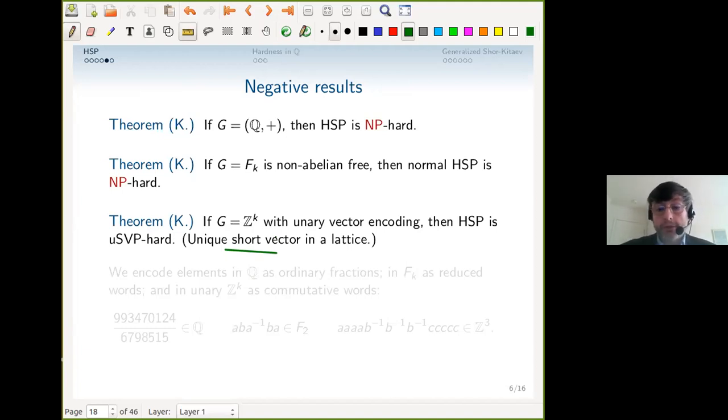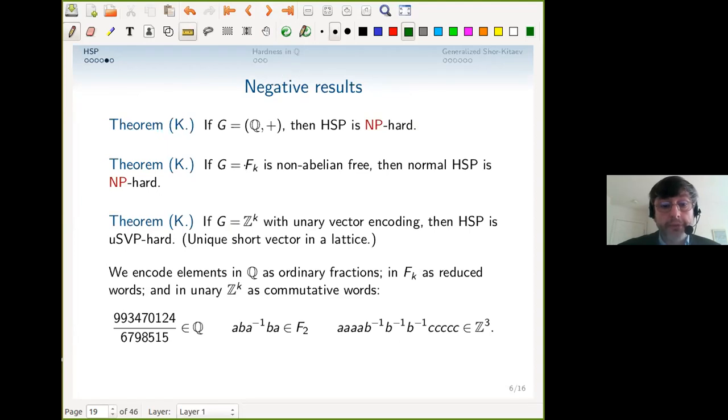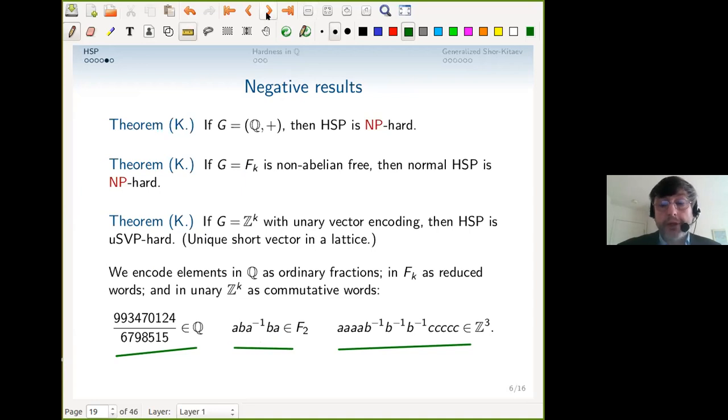Another interesting case is Z^k but with unary vector encoding of the coefficients or pseudo-polynomial costing for oracle queries. Then the hidden subgroup problem is as hard as a short version of the short vector problem. We encode rational numbers in the normal way, elements of a free group as reduced words, and unary encoding is equivalent to commutative words—that was part of the motivation.